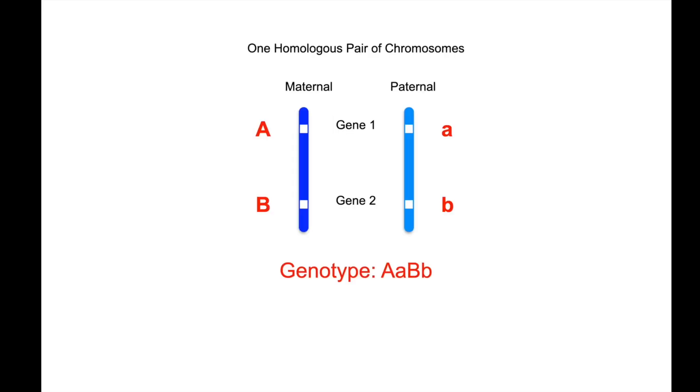So here we have one homologous pair of chromosomes. We have two genes on them. And therefore, since the genes are on only one homologous pair of chromosomes, they are linked.